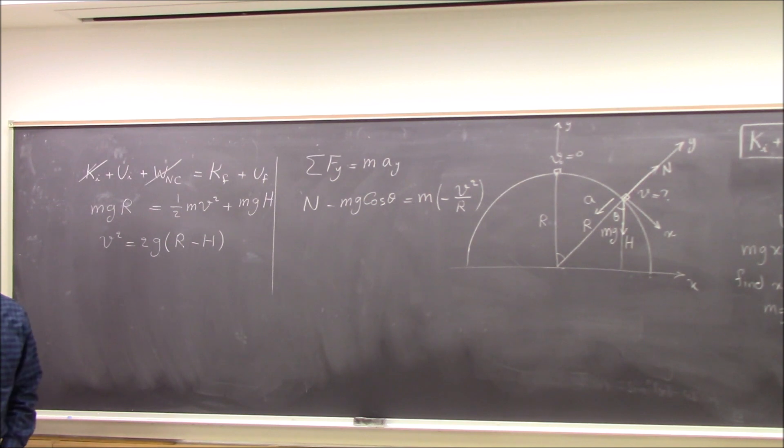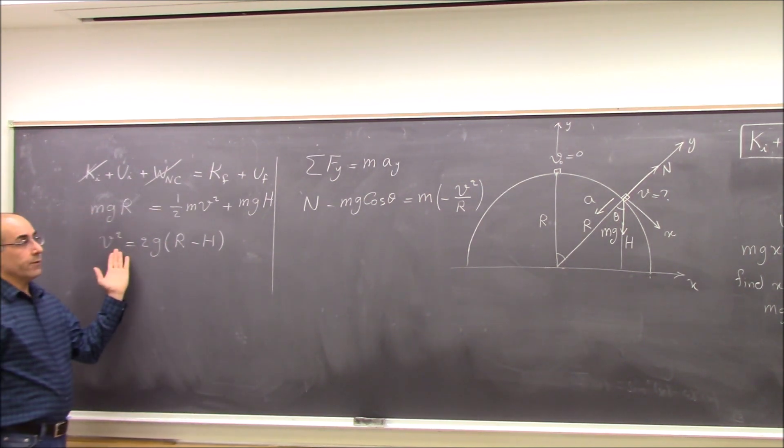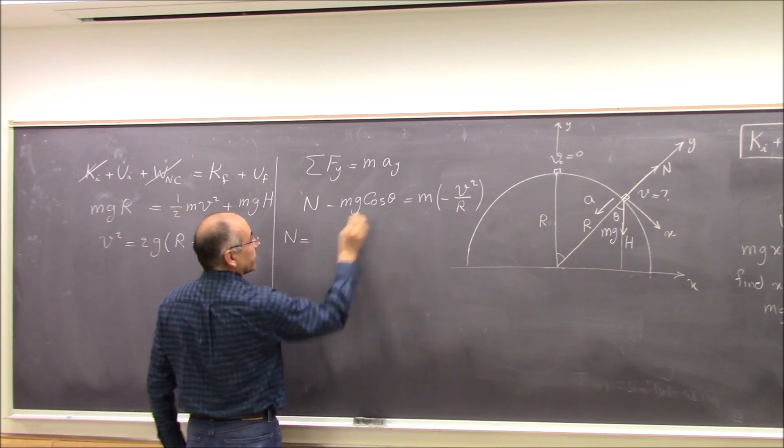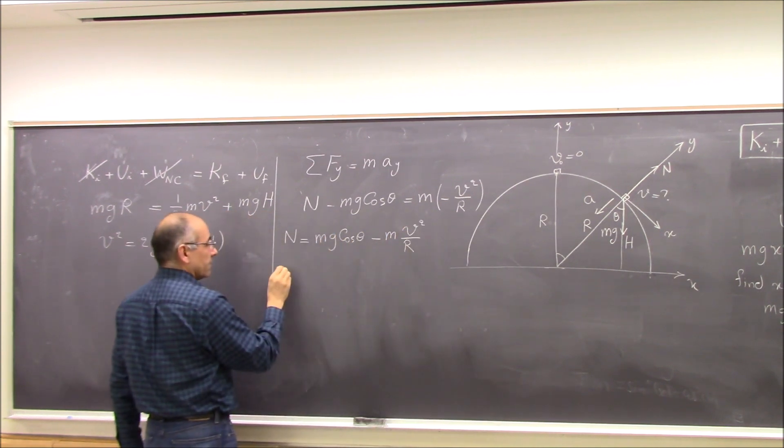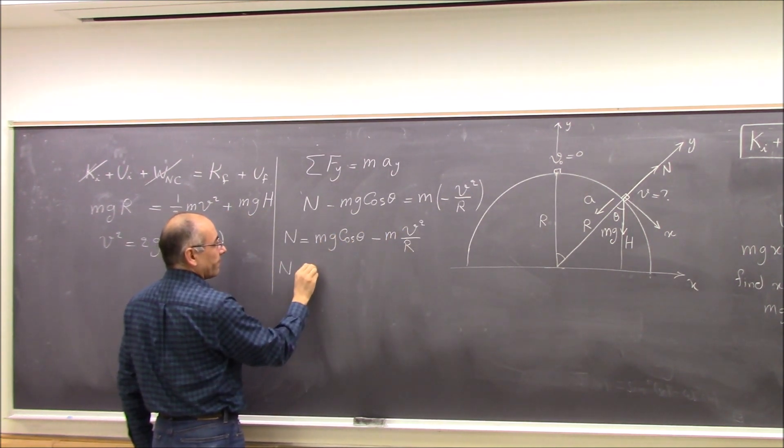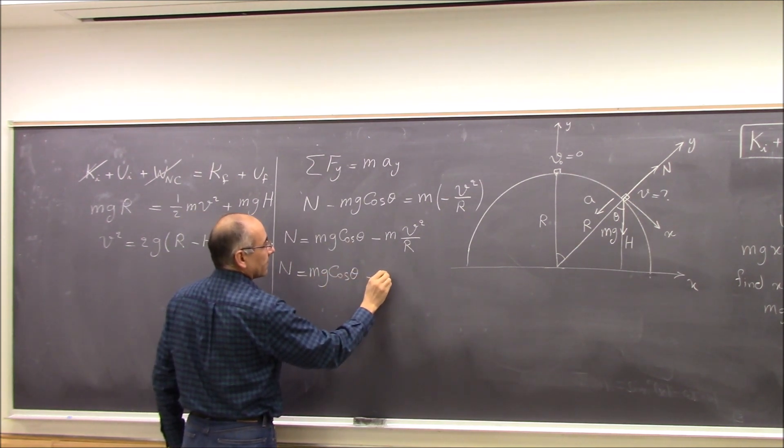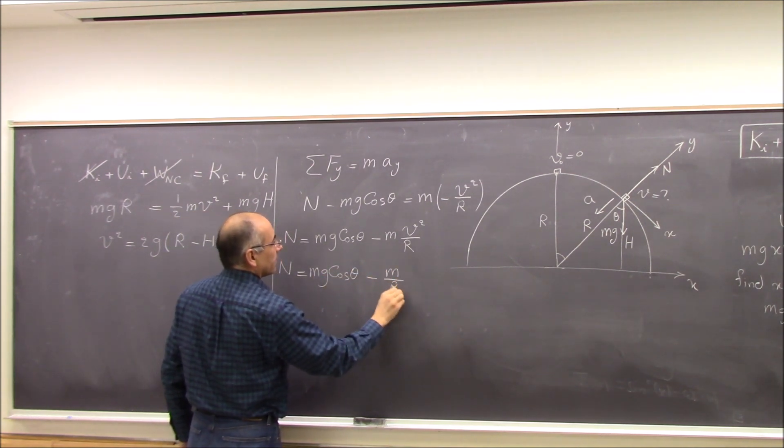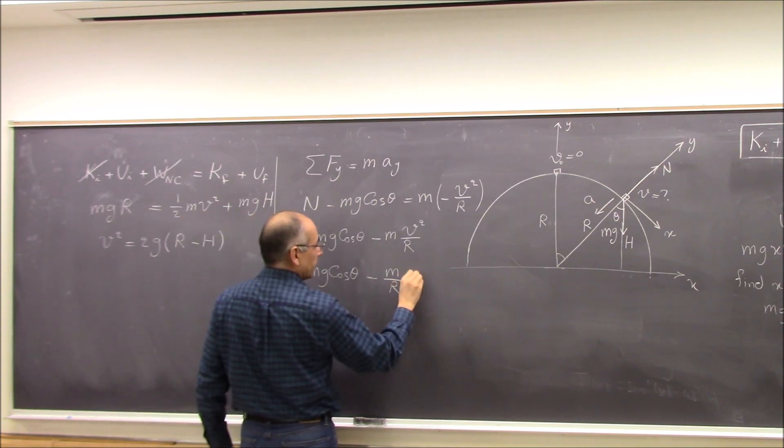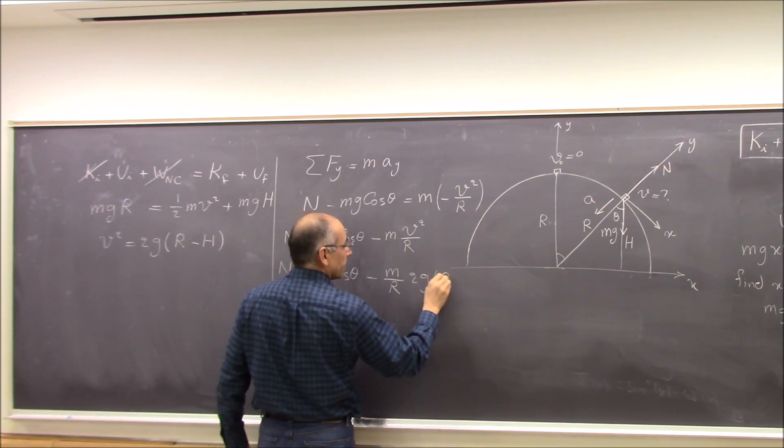So now I have this V squared. I plug it in. So I can say N equals to Mg cosine theta minus M over R times V squared, which is 2g times R minus H.